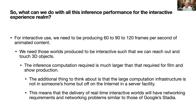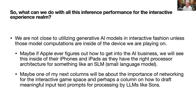For interactive use, we need to be producing 60 to 90 to 120 frames per second of animated content. We need those worlds to be interactive such that we can reach out and touch 3D objects. The inference computation required is much larger than that required for film and show production. Large computation infrastructure is not in someone's home but off on the internet in a server facility somewhere. This means the delivery of real-time interactive worlds will have networking requirements and problems similar to those of Google's Stadia. We're not close to utilizing generative AI models in interactive fashion unless those model computations are inside the device we are playing on. Maybe if Apple ever figures out how to get into the AI business, we will see this inside their iPhones and iPads, as they have the right processor architecture for something like a small language model, an SLM.